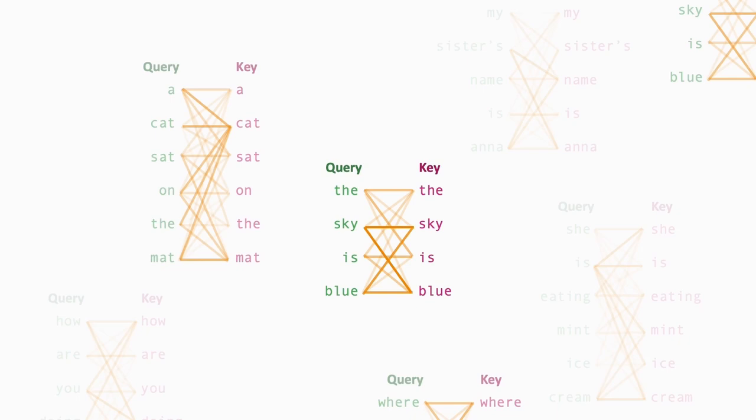Thus, we propose a global view of transformer attention. We design a new visualization technique based on joint query-key embeddings and use it to create AttentionViz, an interactive tool for visualizing self-attention patterns and scale in both language and vision transformers.